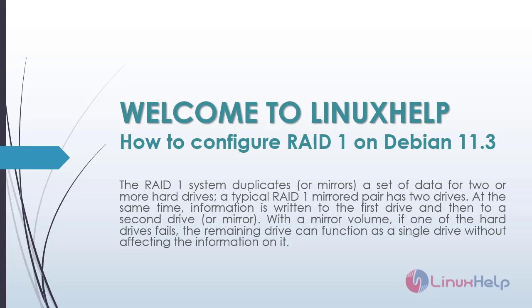Welcome to Linux Help. Today we are going to see how to configure RAID 1 on Debian 11.3. The RAID 1 system duplicates or mirrors a set of data for two or more hard drives. A typical RAID 1 mirrored pair has two drives.